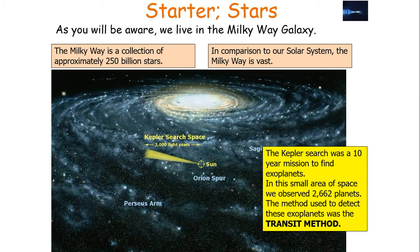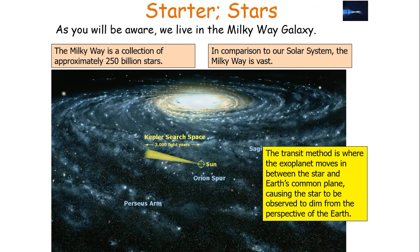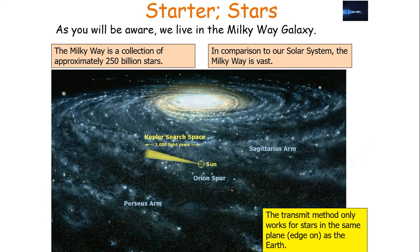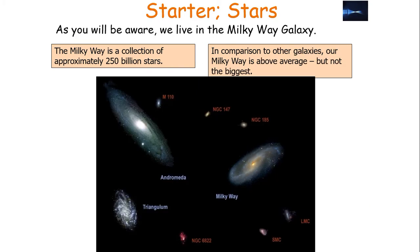In this particular methodology, we use something called the transit method to detect these exoplanets. The transit method is where the exoplanet moves in between the star and the Earth's common plane, causing the star to be dimmed from the perspective of the Earth. The transit method only actually works for stars in the same plane, i.e. edge-on, as the Earth.